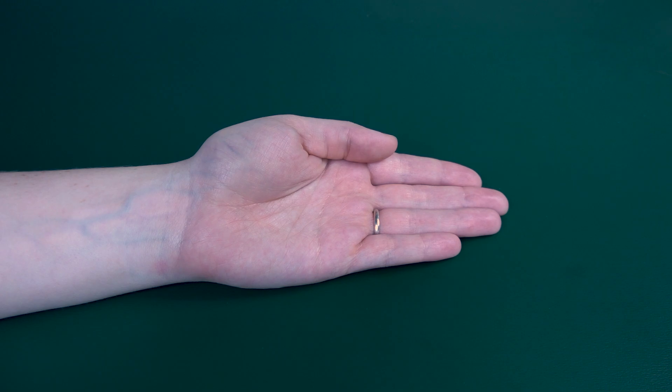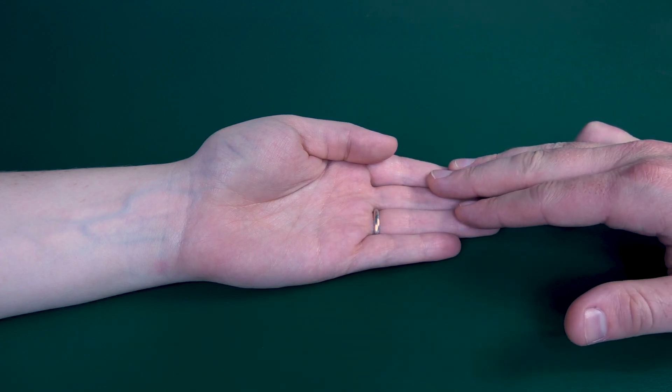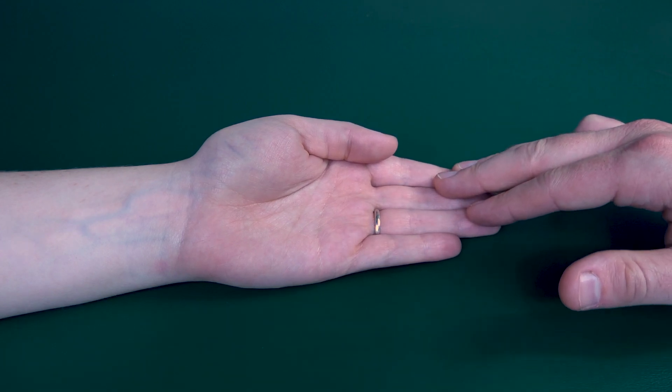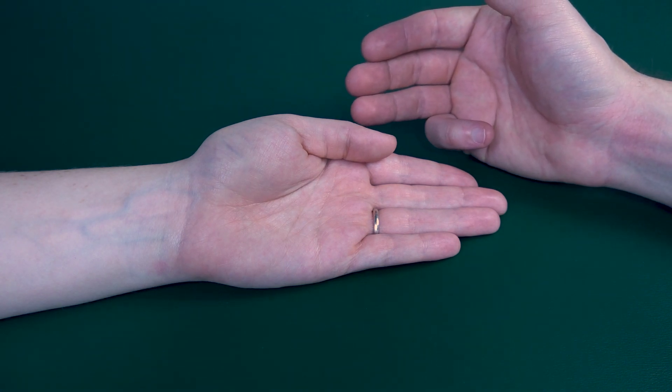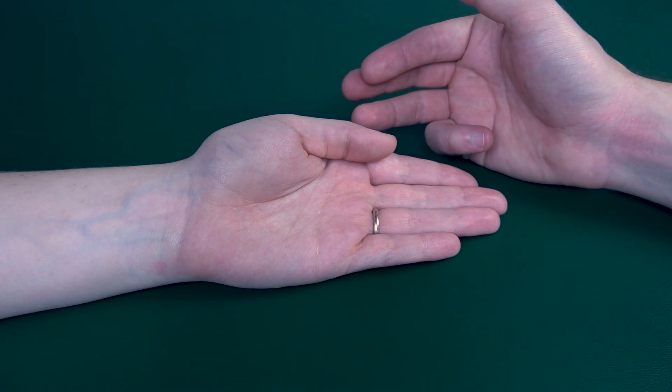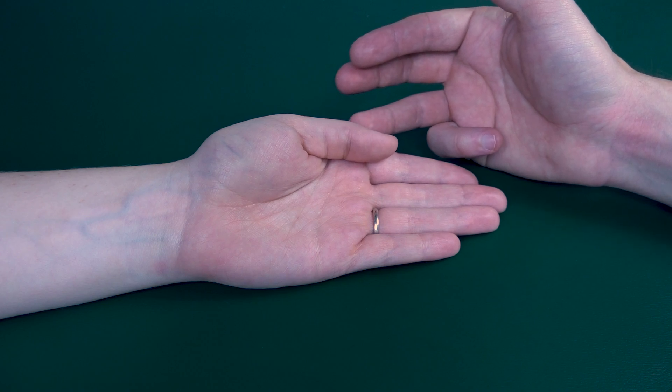Testing palmar abduction, also known as thumb abduction. The patient will be in a seated position with the hand in a supinated position. First thing you will have your patient do is perform thumb abduction towards the ceiling. So go ahead...